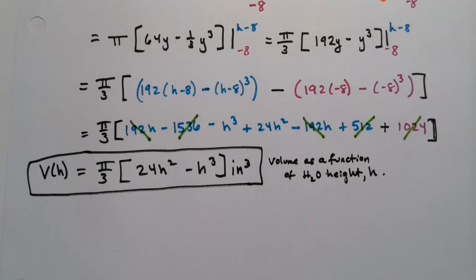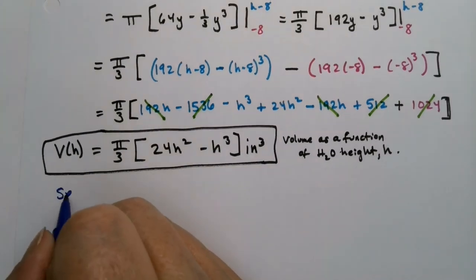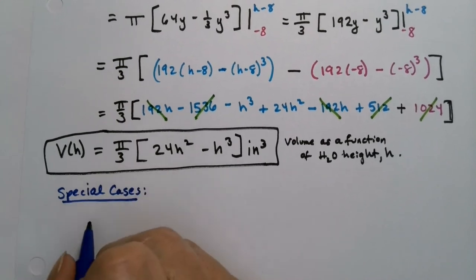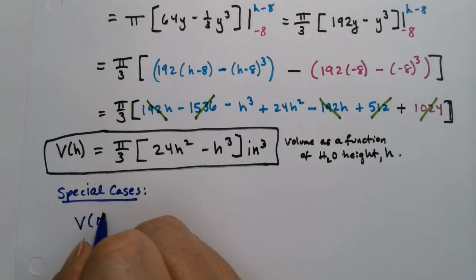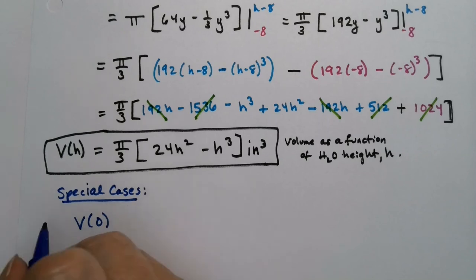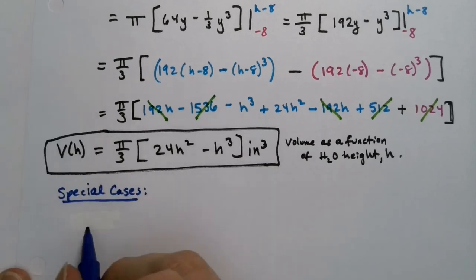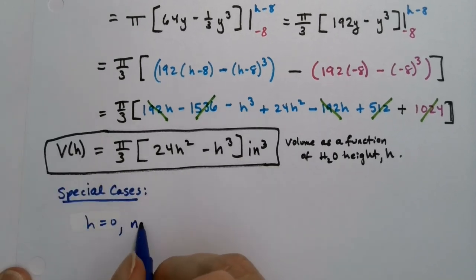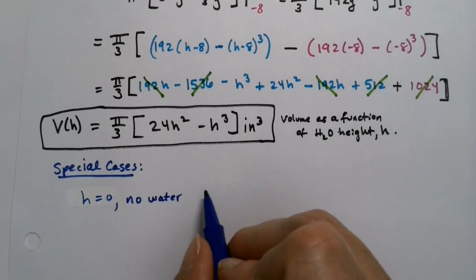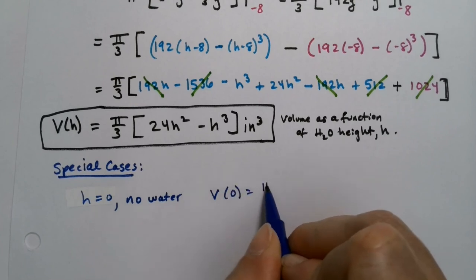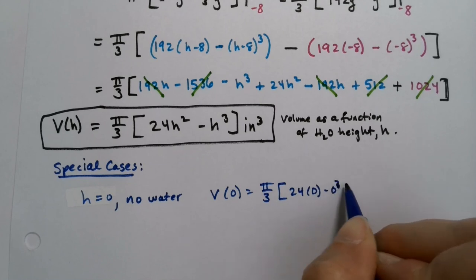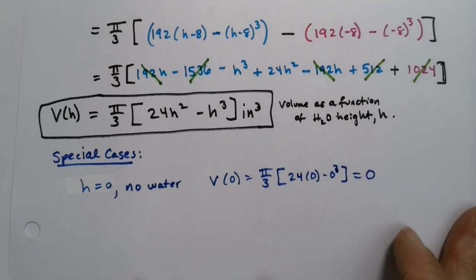Now let's check the special cases. First, V(0): if the height is 0 there's no water, so the volume should be 0. Plugging in: π/3 times (24·0² − 0³) = 0. That checks out.